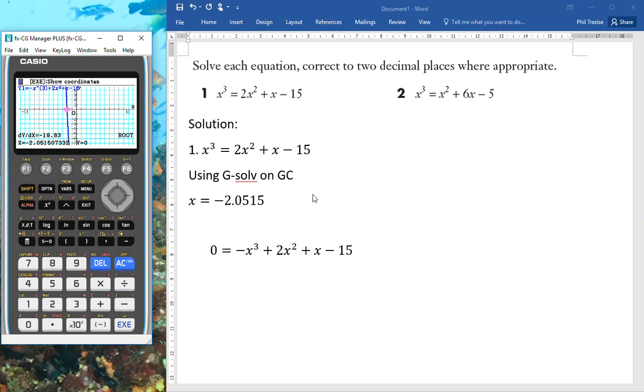So again, I would say using gsolve, x equals negative 2.0515. How could we test this as true? We could substitute this back into x cubed. See what we get? Substitute this into the quadratic and we should get the same amount. Alternatively, we could substitute into here and see that we solve and get zero. The one here would be done in exactly the same way. I'll leave that one for you to try on your own. But there are two different ways of doing this using the graphing app. There is, of course, another way.